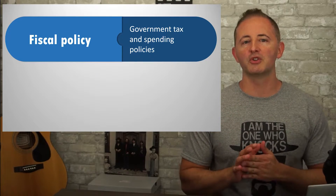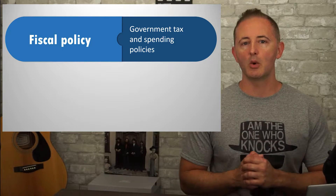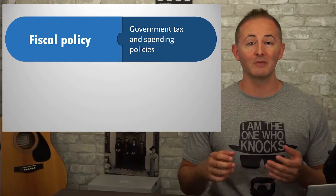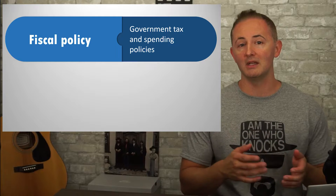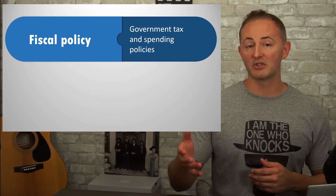So way back in video 3.1 when I introduced you to the AD curve and walked you through all the things that shift the AD curve, I briefly mentioned the term fiscal policy. Fiscal policy refers to the government's tax and spending policies. So anytime a government is taxing somebody or spending taxpayer money, that's fiscal policy.